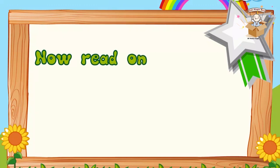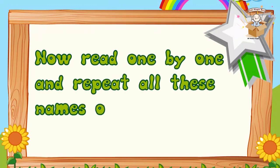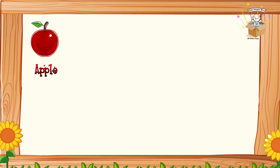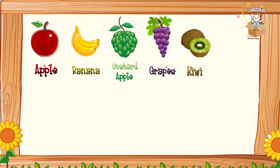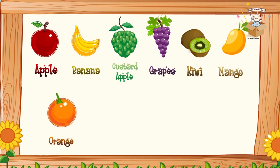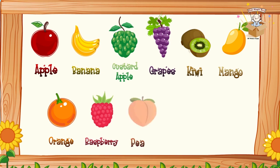Now read one by one and repeat all these names once again. Apple. Banana. Custard apple. Grapes. Kiwi. Mango. Orange. Raspberry. Peach. Strawberry.